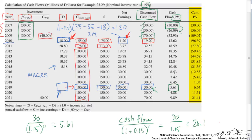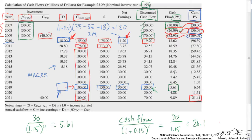The cumulative present value is a running tally — adding each year's present value to all previous years. For example, 56.1 is the sum of the first two years' present values, and 109 is that cumulative total plus the next year's value. At the end of the venture in 2021, the net present value in today's dollars is worth about $21.4 million.